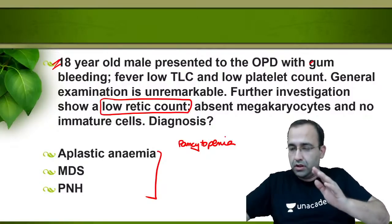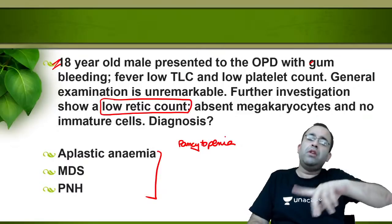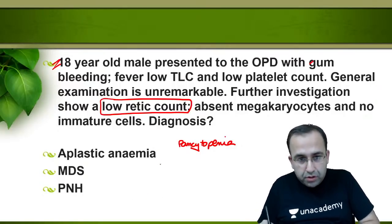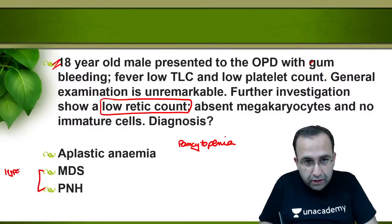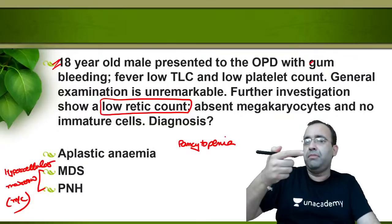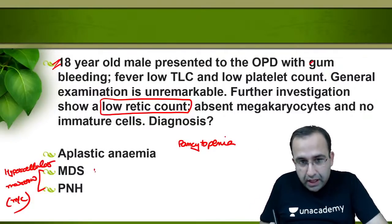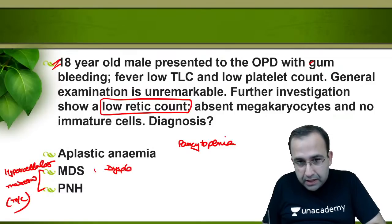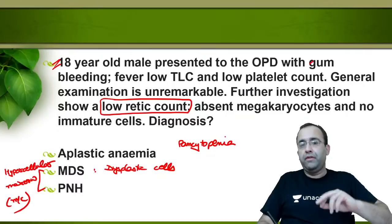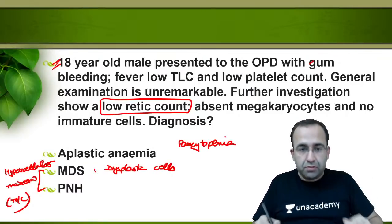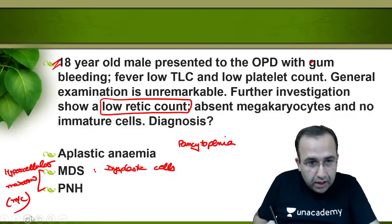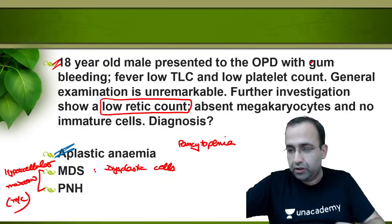MDS and PNH most commonly have a hypercellular marrow, whereas aplastic anemia has a hypocellular marrow. If the examiner wanted to point towards MDS, he would have mentioned dysplastic cells in the bone marrow — that is not mentioned, so MDS is a lower differential. PNH is a hemolytic anemia associated with a high retic count, so PNH was out. By default, the diagnosis is aplastic anemia.